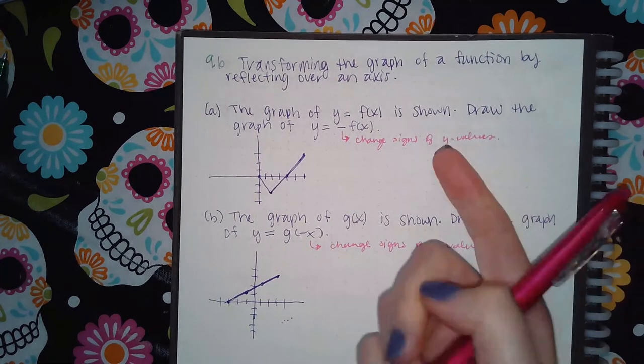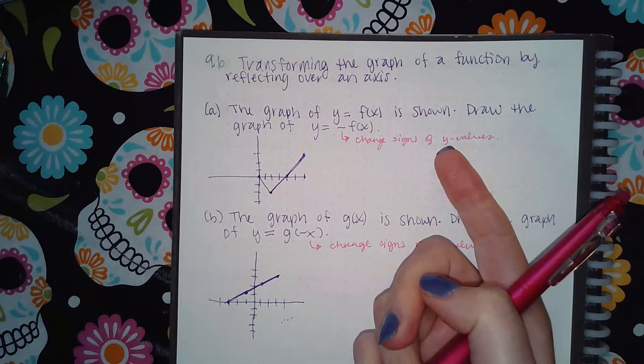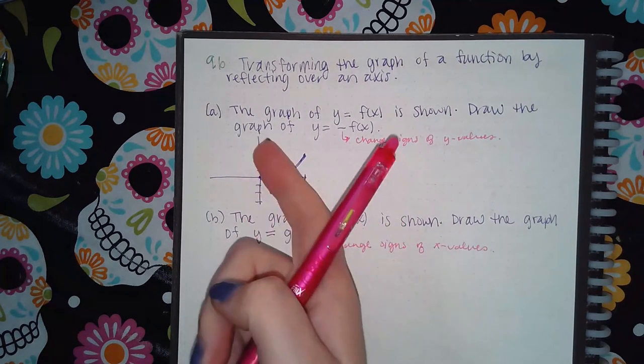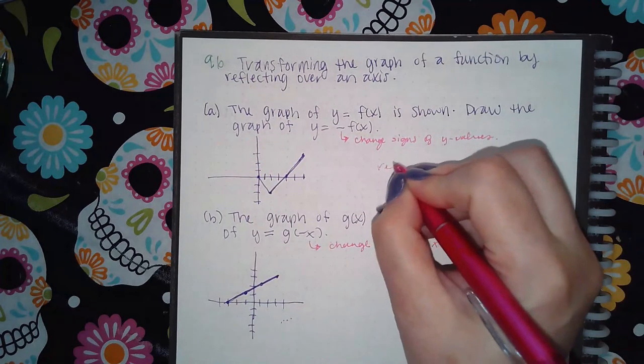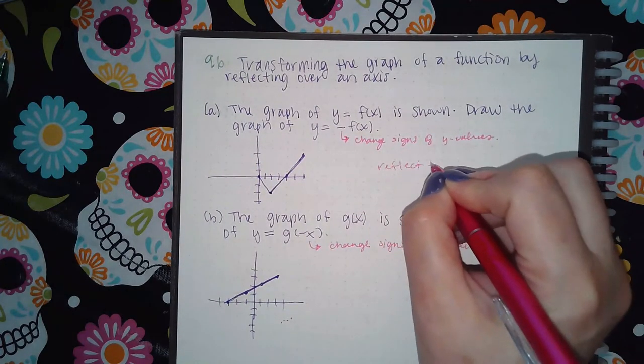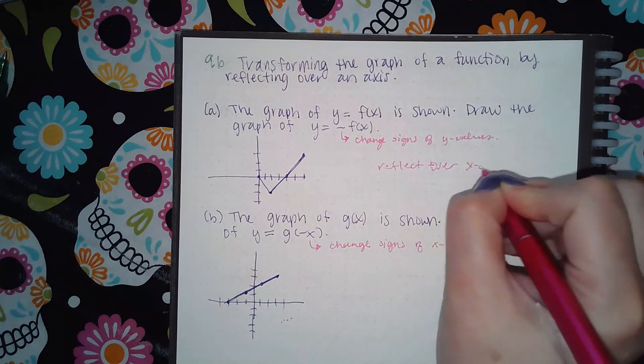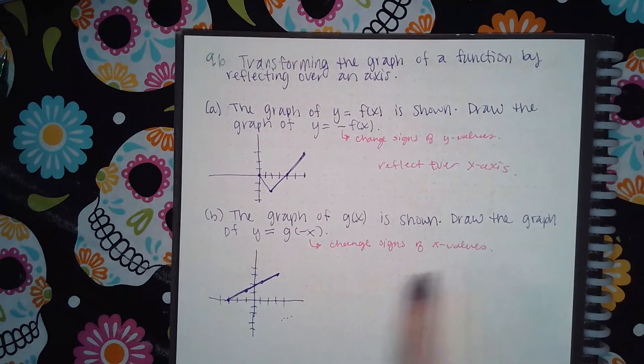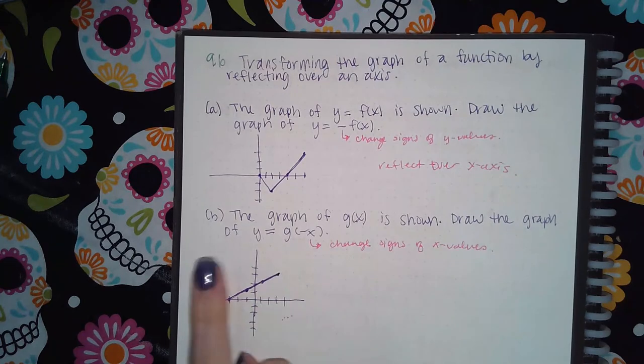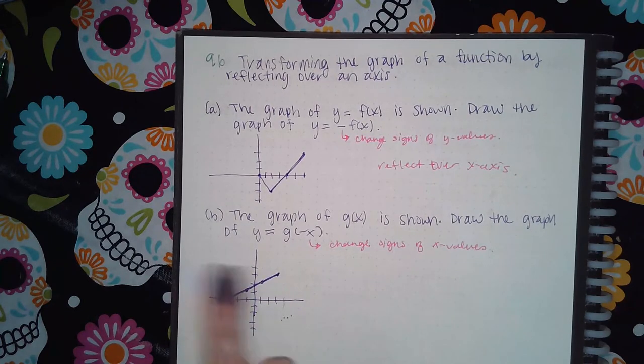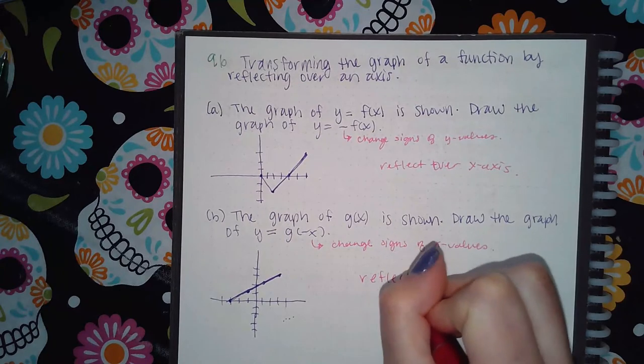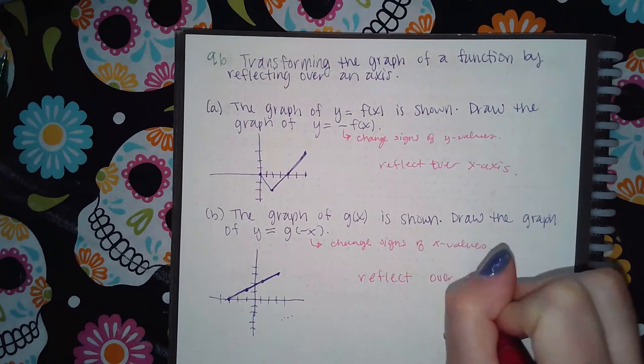And so what that is ultimately going to result in is if you're changing the y values from positive to negative or from negative to positive, it's going to reflect over the x-axis. And if it's on the inside and you're changing the x values, then that means what is on the right goes to the left and what is on the left goes to the right. So then in this case, it reflects over the y-axis.